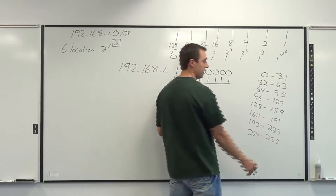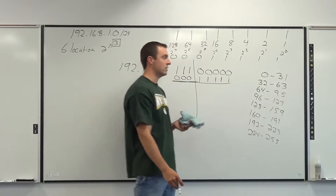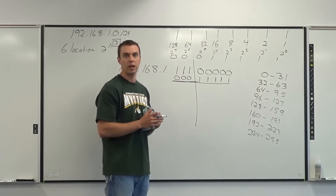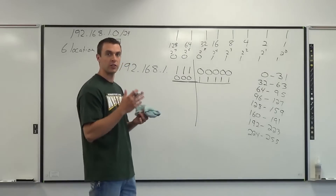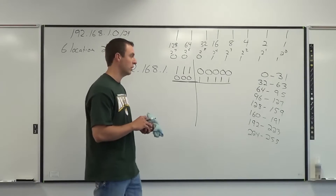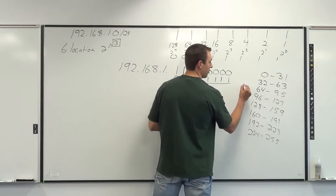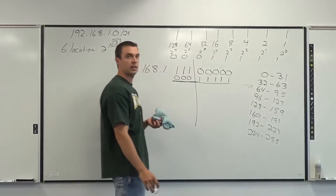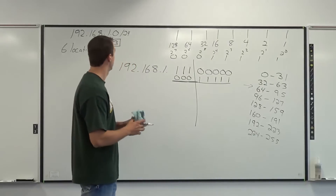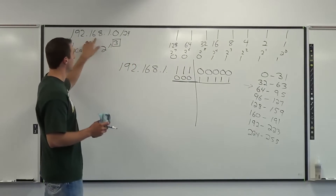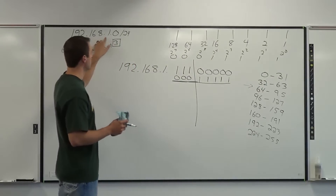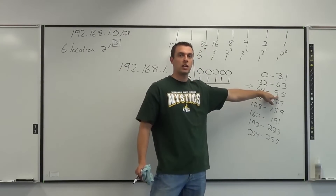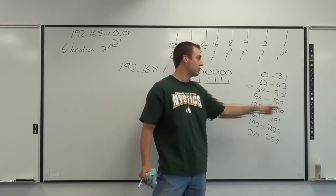All of these numbers on the right-hand side of the ranges are my broadcast addresses. So if I wanted to send a message to every single computer in the third network location, I would send that message to 192.168.1.95.